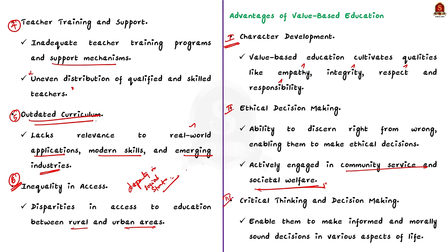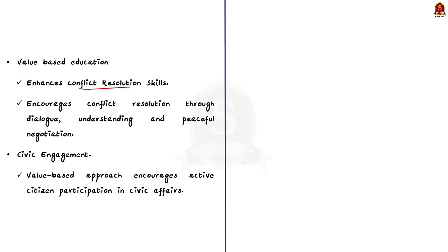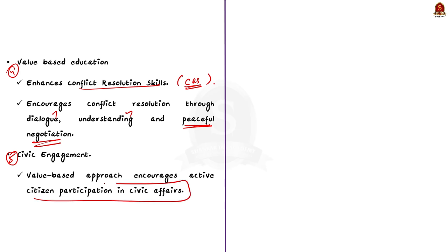Thirdly, critical thinking and decision-making — value-based education encourages students to think critically and analyse situations from an ethical perspective, enabling informed and morally sound decisions. Fourthly, it enhances conflict resolution skills — teaching value education encourages conflict resolution through dialogue, understanding and peaceful negotiation, promoting a harmonious environment in society. Fifthly, regarding civic engagement — a value-based approach encourages active citizens' participation in civic affairs, nurturing a sense of responsibility towards the nation.